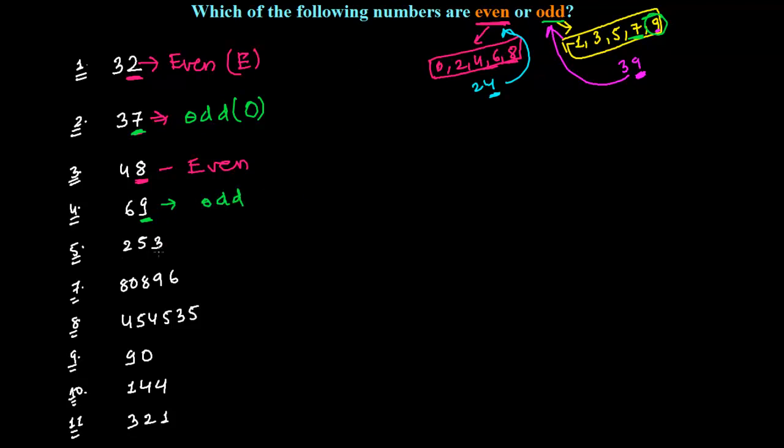Next, see here is 253. What about bigger numbers? It doesn't matter, just you have to see the last digit. The last digit is 3 and that's coming in the group of odd numbers. So that's why this is also an odd number.